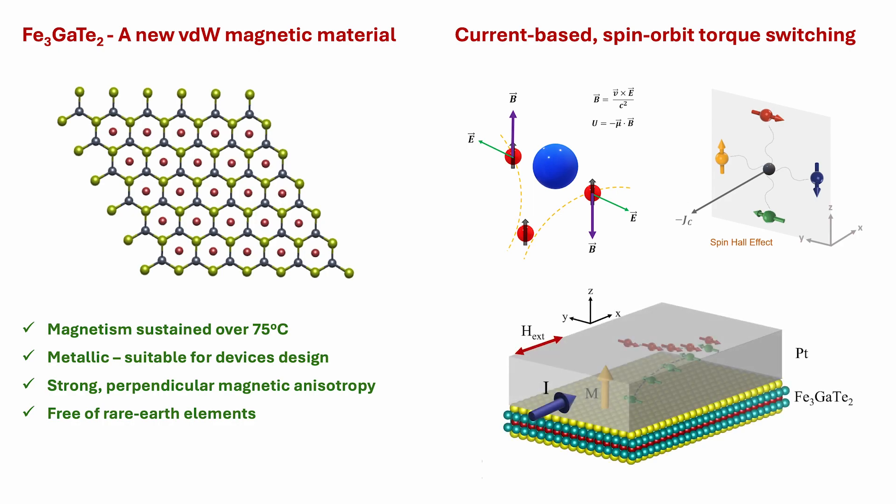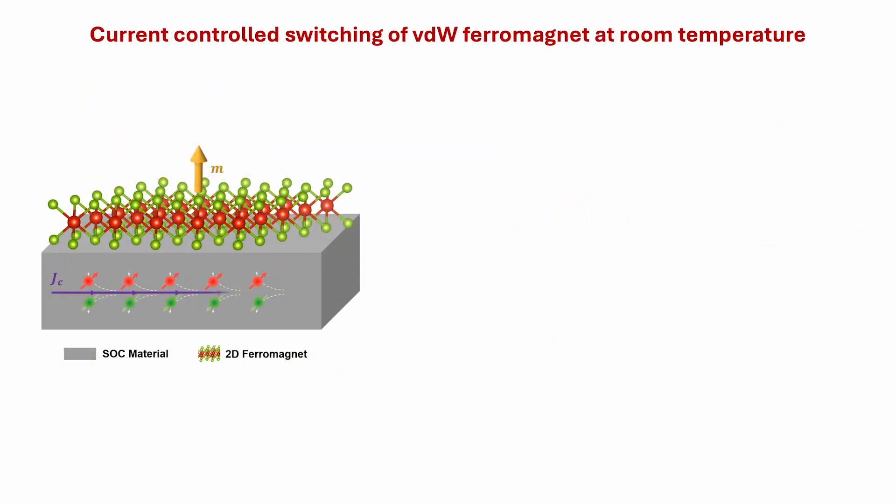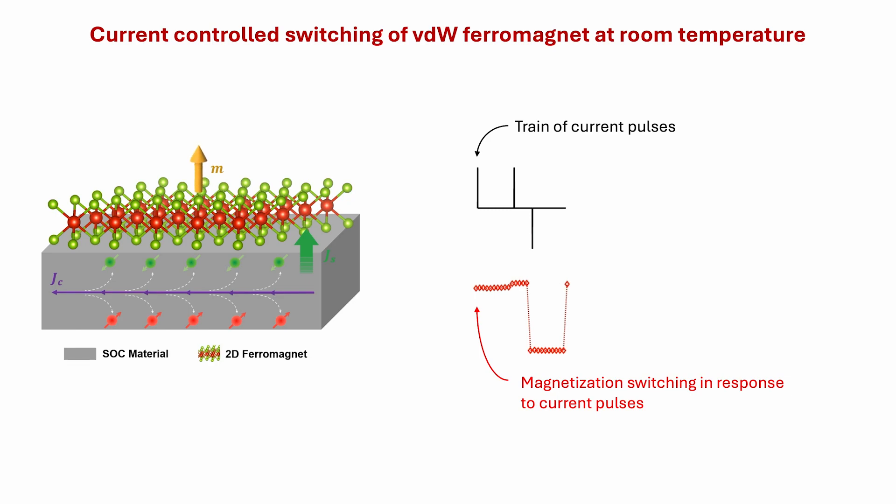In our device, the lateral current flowing in the platinum layer generates an orthogonal spin current through the spin-hall effect, which interacts with the ferromagnet underneath to cause switching. Thus, by applying positive or negative current pulses, we can switch the ferromagnet's magnetization through 180 degrees, providing a way of controlling the magnet electrically.